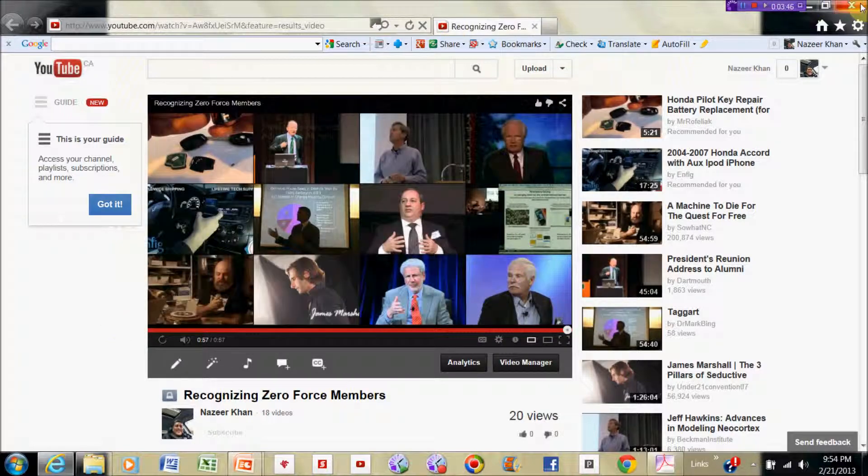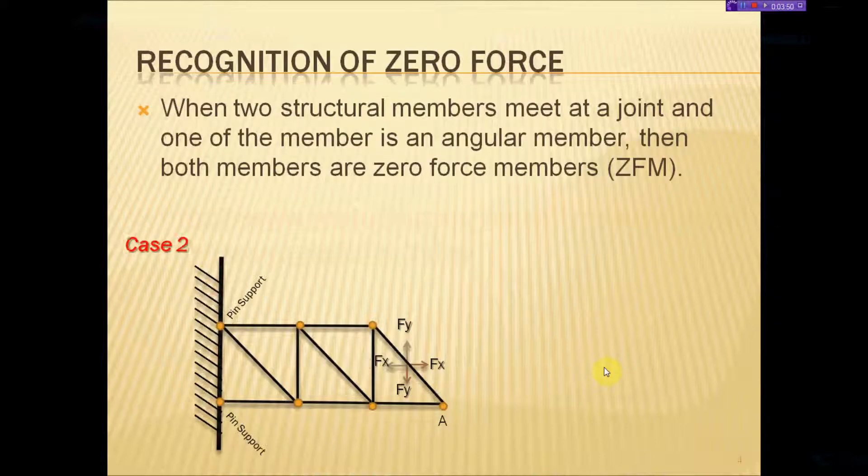Let's go back to our presentation and consider the second scenario, case two. When two structural members meet at a joint and one of the member is an angular member, then both members are zero force members. I'm speaking about this particular joint here.